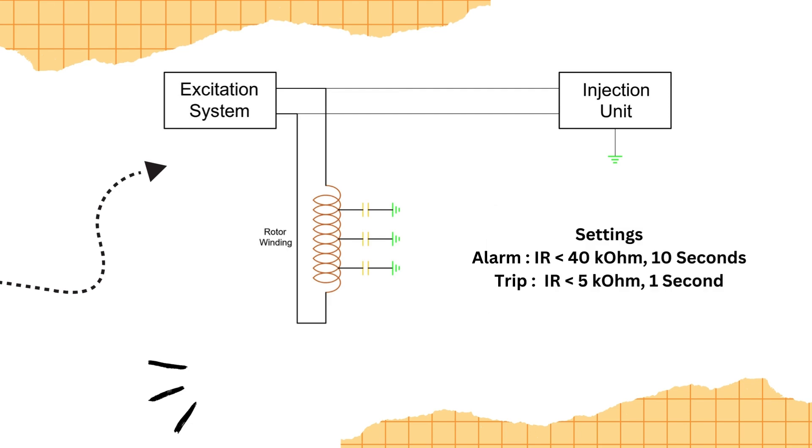Typically, the relay has two settings, the alarm and the trip. The alarm is triggered when the insulation resistance value drops below 40 kilo ohms for 10 seconds. The trip setting, on the other hand, activates when the insulation resistance value falls below 5 kilo ohms for just one second, leading to the generator being tripped to prevent further damage.